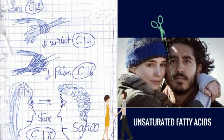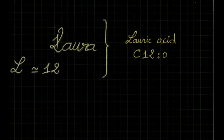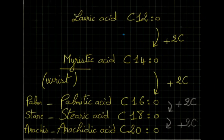Laura is lauric acid, common abbreviation C12. You won't forget it because capital letter L of Laura is very similar to the number 12. It's the only one you need to remember because the next ones you get by just adding two carbons each time.